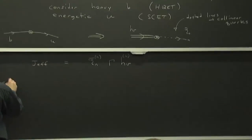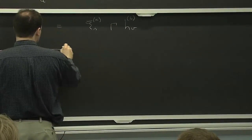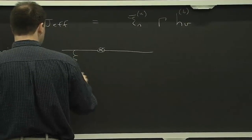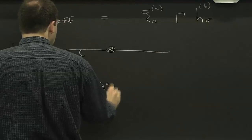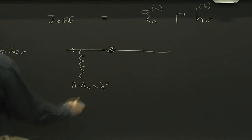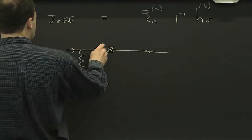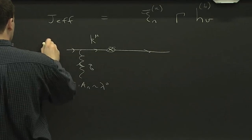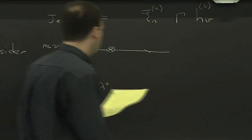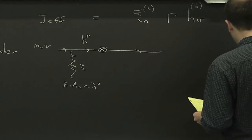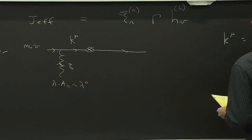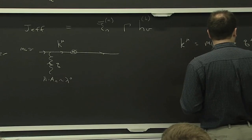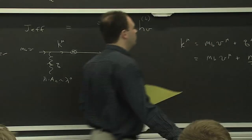But let's consider adding these A^n_minus gluons, since they are things we could add to the current at no cost in power counting. So we can add any number of A^n_minuses here, and we'd have something that's the same order. Let's consider another diagram in QCD where I attach an A^n_minus gluon to the heavy quark. I have a different number of external fields, but this one costs nothing when I go to the effective theory. Let's call the gluon momentum k, the collinear momentum q, and the heavy quark momentum M_B v.